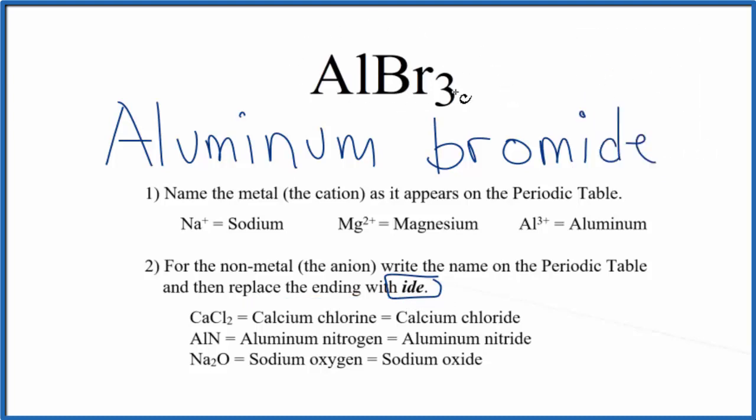So the name for AlBr3 is aluminum bromide. Sometimes this is called aluminum tribromide because the electronegativity difference between this Al and the Br isn't quite as large, so there's a large degree of covalent character in the compound. This is the more accepted name, though, aluminum bromide.